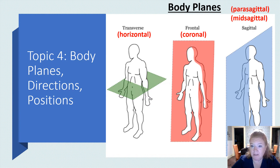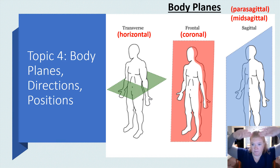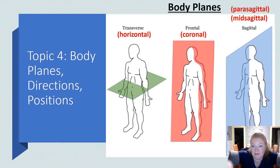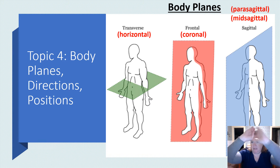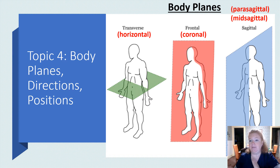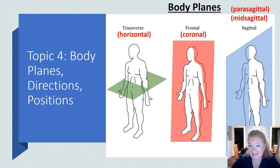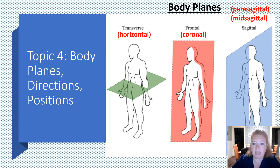For body planes, remember horizontal or transverse. Frontal or coronal separates the front of you from the back of you. Mid-sagittal goes right down your midline. Parasagittal is any line that is not mid-sagittal. So sagittal refers to all of them; mid-sagittal is one specific plane, and parasagittal is anything that's not mid-sagittal.